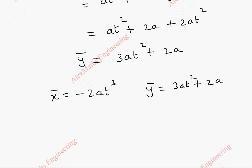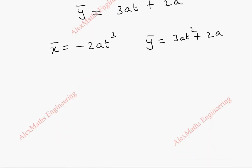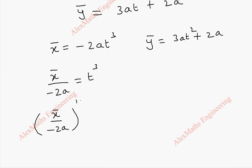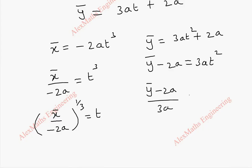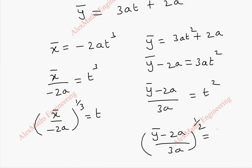By eliminating t, we get the equation of the evolute, which is the locus of the center of curvature. From x-bar, we get x-bar by minus 2a is t³, so (x-bar / minus 2a) to the power 1/3 equals t. From y-bar, y-bar minus 2a equals 3at², so (y-bar minus 2a) by 3a is t². Therefore (y-bar minus 2a) by 3a to the power 1/2 equals t.